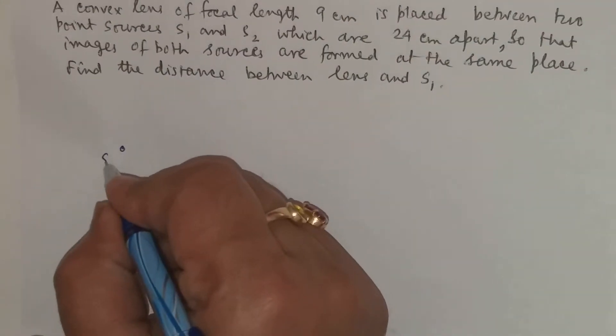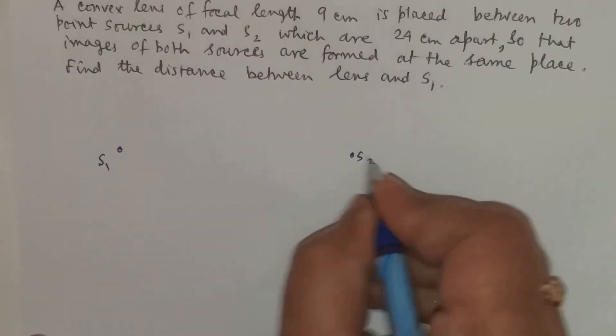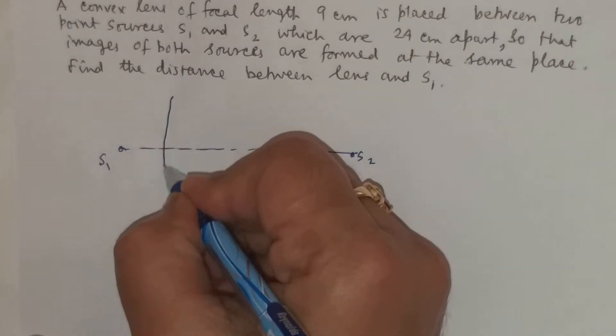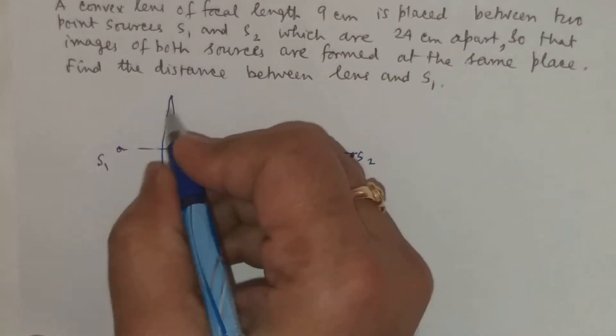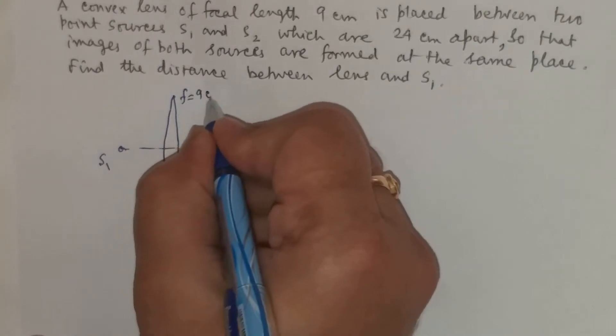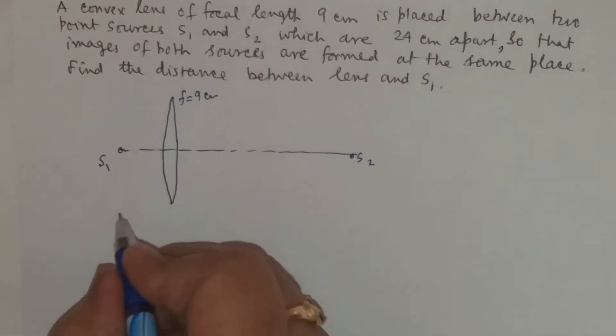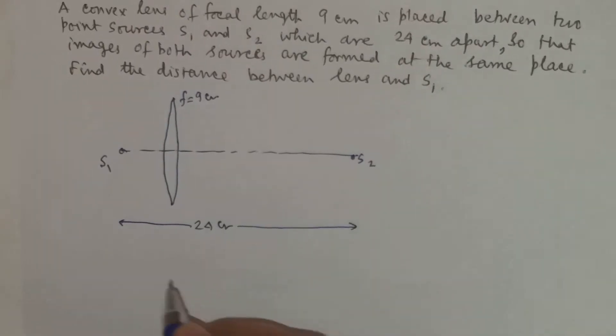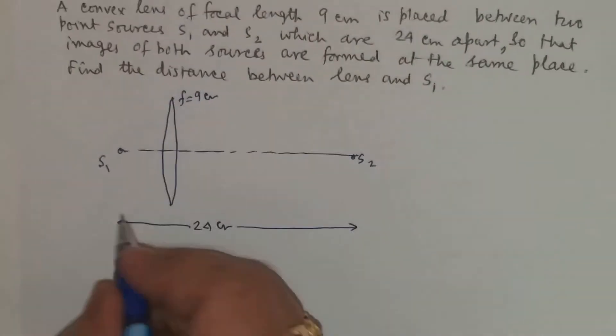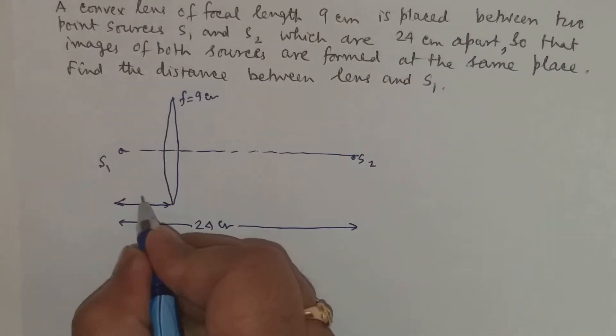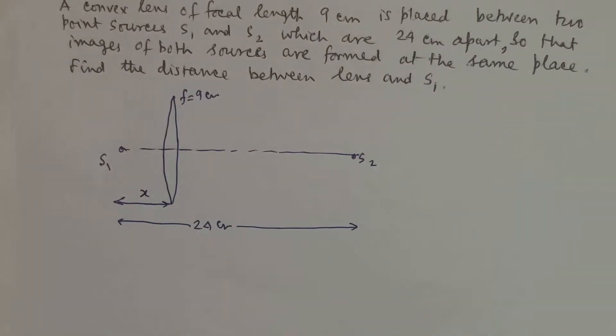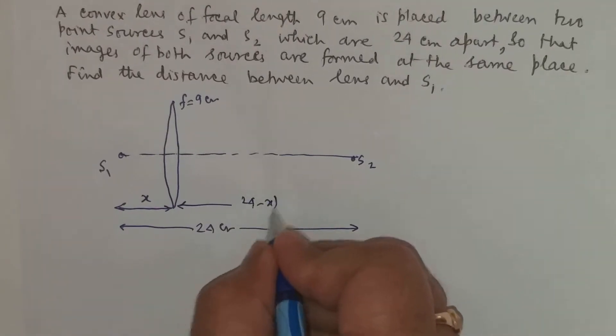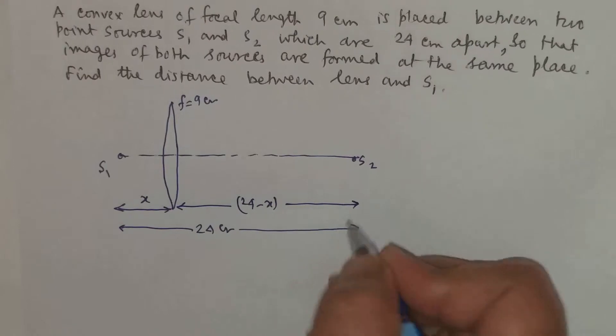Let us take that this S1 and this S2 are the two point sources of light and we place the convex lens whose focal length is 9 cm at this particular place. Now this is 24 cm and we have to find out the distance between the lens and S1. So let us say the distance between the lens and S1 be x. So this is 24 minus x from S2.